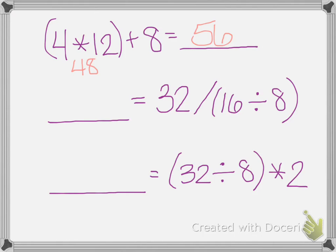So for the second one, we have 16 divided by 8 in parentheses, so we need to do that first. 16 divided by 8 is 2, and then 32. Oops, I did that problem wrong. It says 16 divided by 2. So 16 divided by 2 is 8. 32 divided by 8 equals 4.